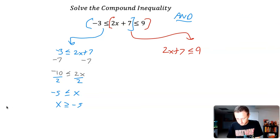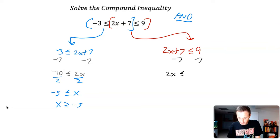Now I'll solve the one in red. I subtract seven the same way: two x is less than or equal to nine minus seven, which is two. Dividing by two gives x is less than or equal to one.